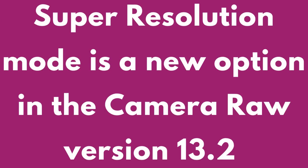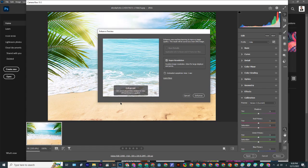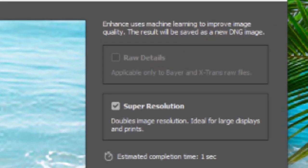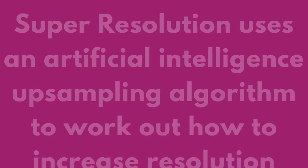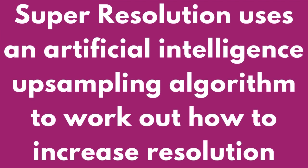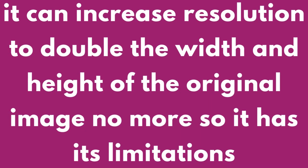Super resolution mode is a new option in Camera Raw version 13.2. It uses an artificial intelligence upsampling algorithm to work out how to increase resolution. It can increase resolution to double the width and height of the original image — no more — so it has its limitations.